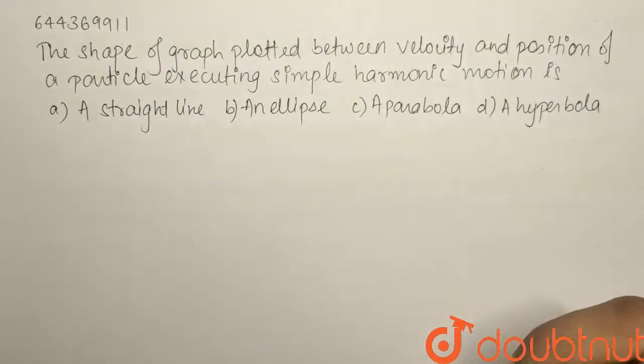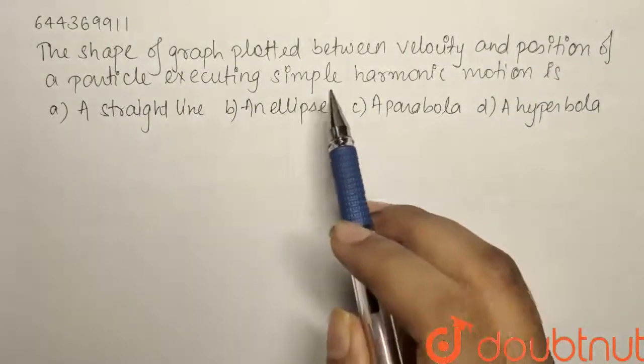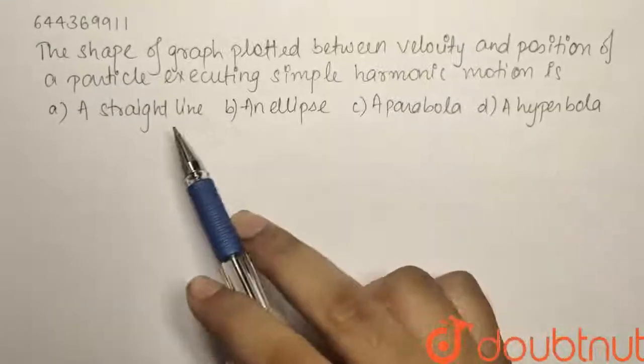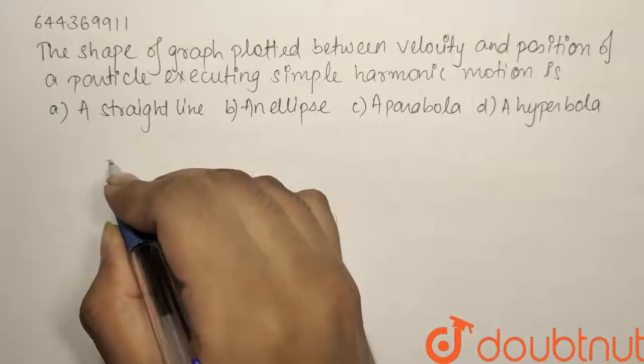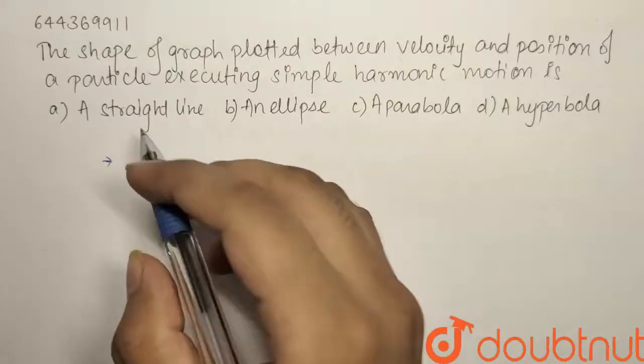So here we have a question from the topic SHM. The shape of graph plotted between velocity and position of a particle executing SHM is. So we have to draw the graph between velocity and position of the particle.